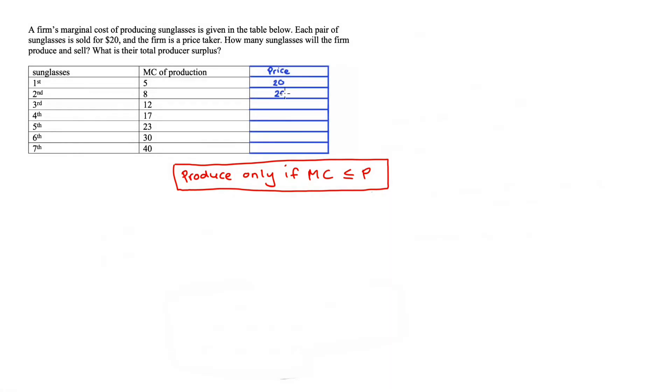One neat thing that we can do here is just to add another column where we record the price of each pair of sunglasses, which is $20. The detail in the question about the firm being a price taker is important because it means that we can assume that the price will always be $20 regardless of how much the firm produces.